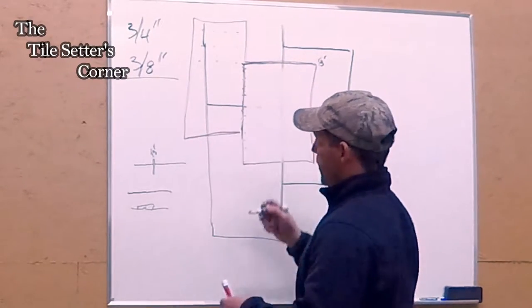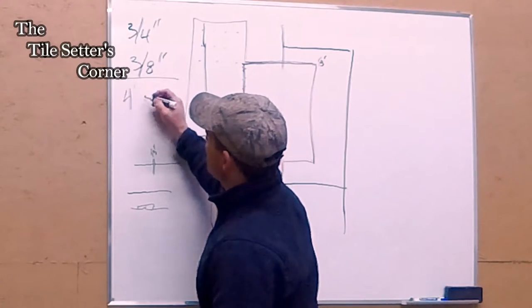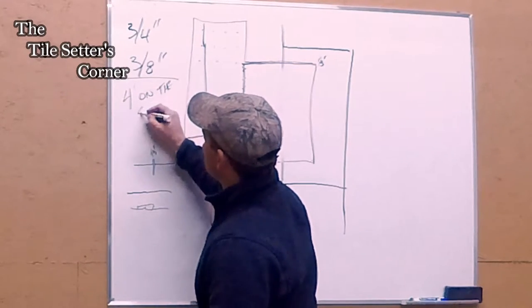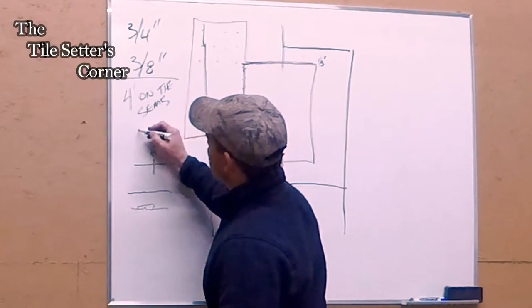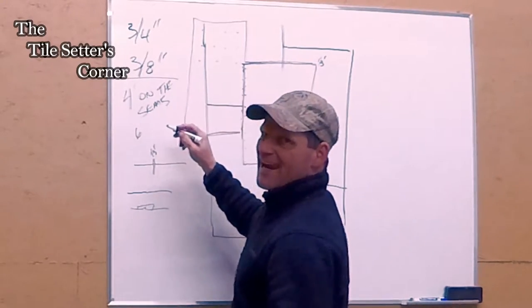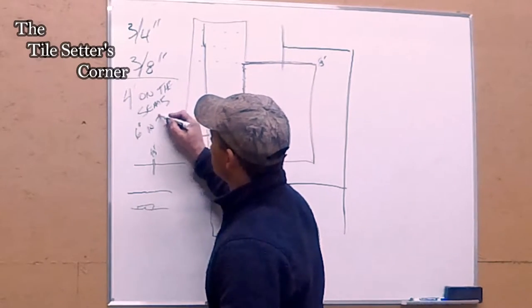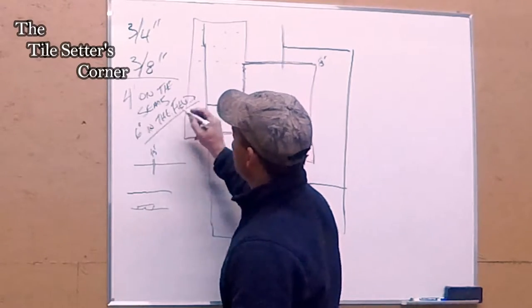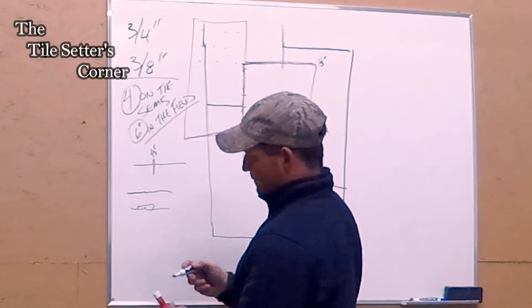So that's why it's so important to keep an eighth of an inch everywhere you put your underlay spacing. And remember, every four inches on the seams, and every six inches, they say six to eight, but I like to do six inches in the field.